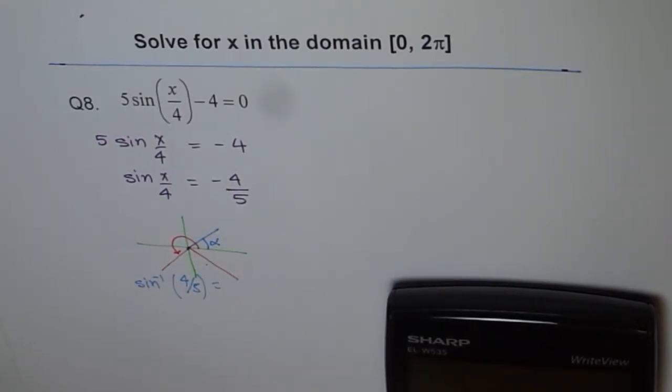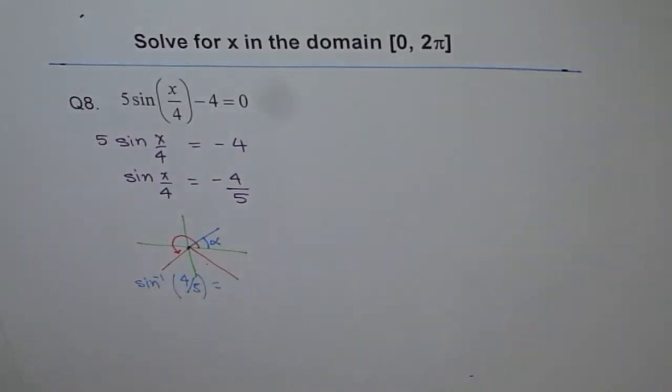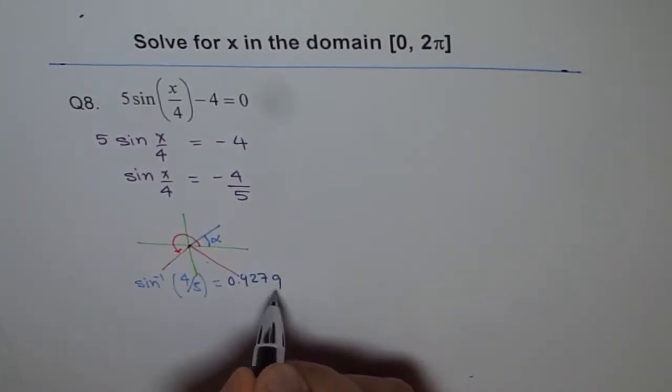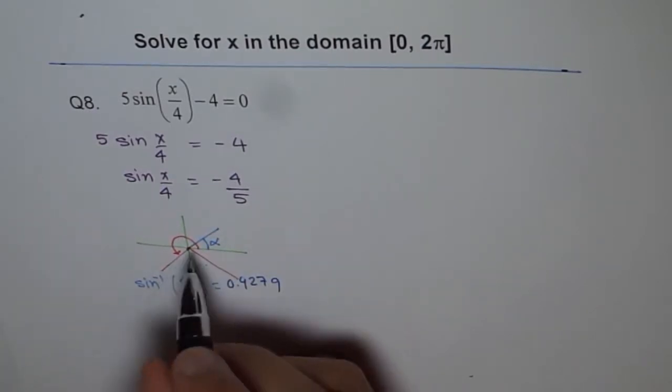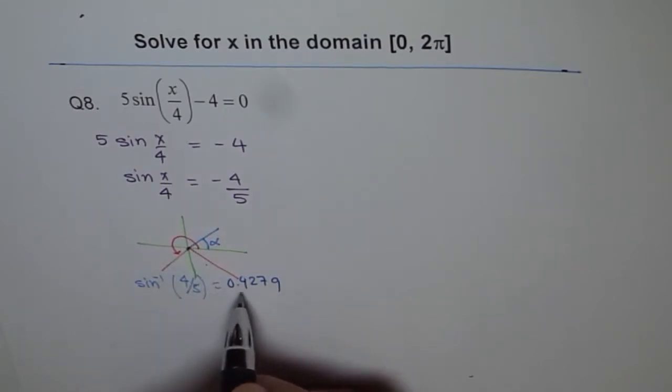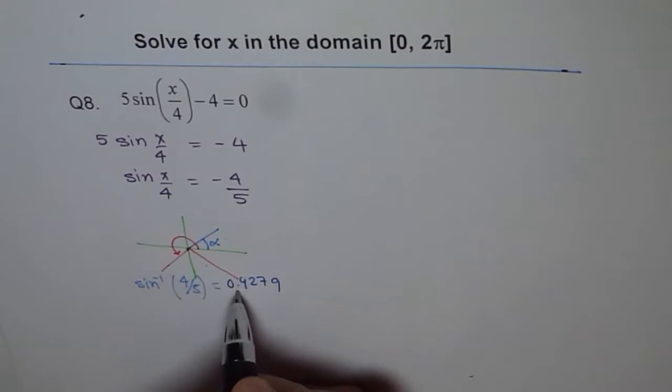Sin inverse of 4 divided by 5 equals 0.9279. So 0.9279 in radians. And possible answers are π + 0.9279 and 2π - 0.9279. These are possible answers.